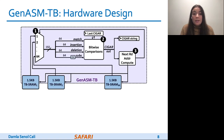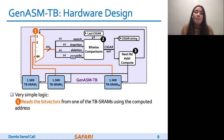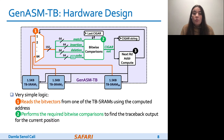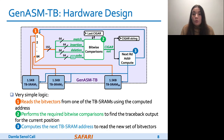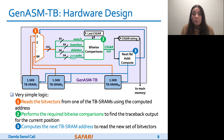We implement GENASM-TB hardware using very simple logic, which first reads the bit vectors from one of the TB SRAMs using the computed address, then performs the required bitwise comparisons to find the traceback output for the current position, and finally computes the next TB SRAM address to read the new set of bit vectors. After GENASM-TB finds the complete traceback output, it writes this output to main memory and completes its execution.